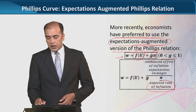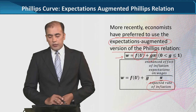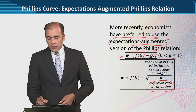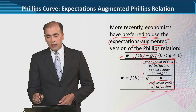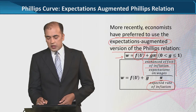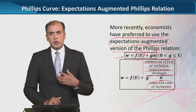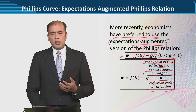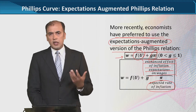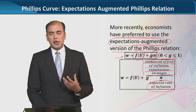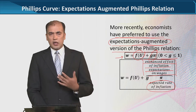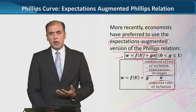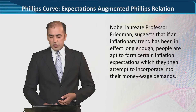The expected inflation rate is pi. Overall, when we multiply, this will tell us the enhanced effect of inflation expectations on wages. Because already inflation has an effect, but inflation expectations enhance this relationship further — that is the contribution captured by this term.